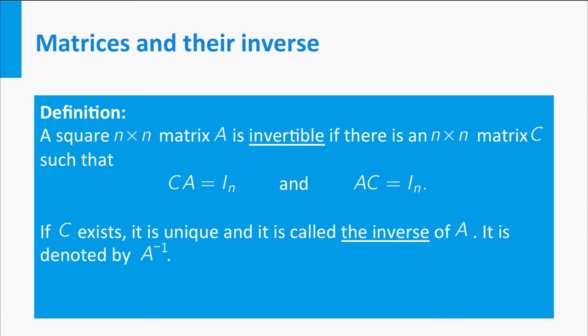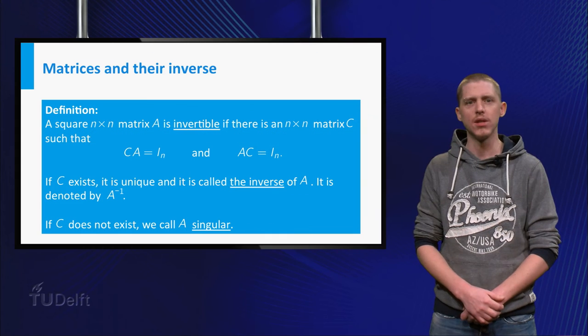If C exists, it is unique, so we can call C the inverse of A and denote this by A to the power minus 1, just like for the numbers. If C does not exist, you say A is singular.